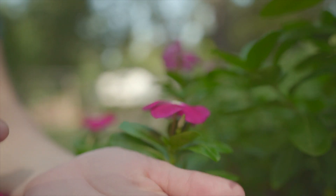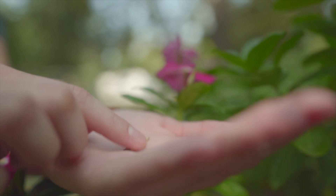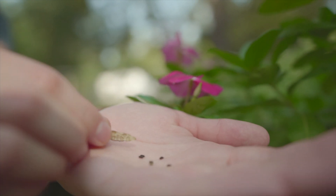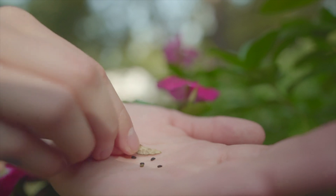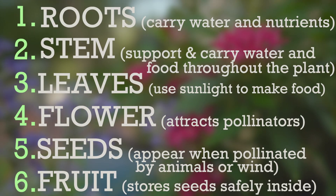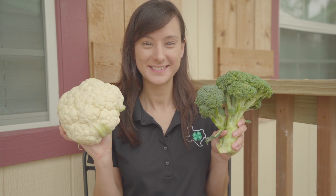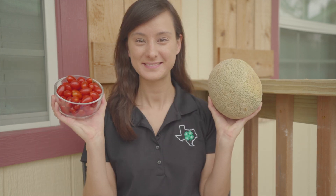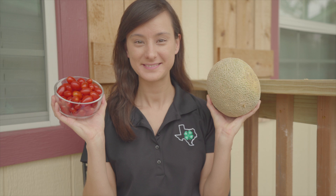And finally, a seed can make a new plant. So those were your six basic plant parts, and now you know how to classify plants. For example, broccoli and cauliflower are in the flower category. Melon and tomato are in the fruit category. Pretty easy, right?